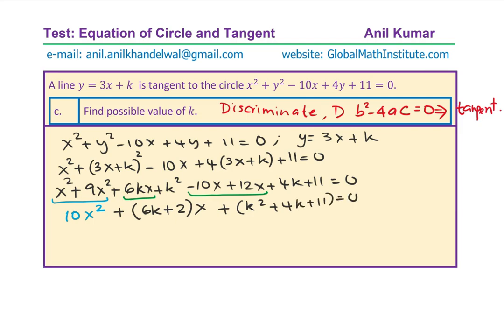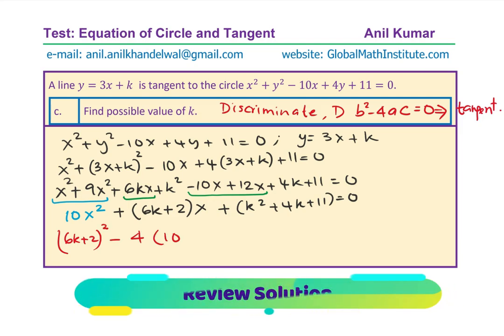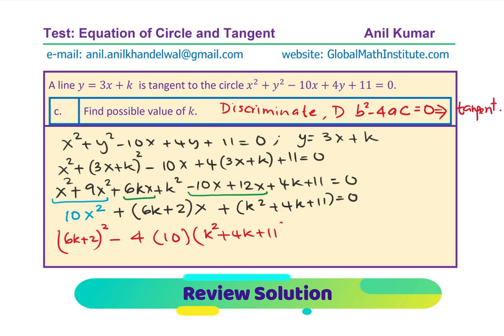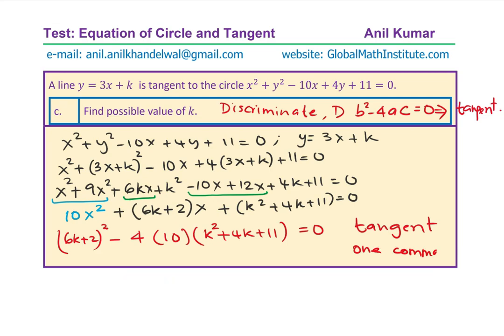This is the quadratic equation we have, and now b² − 4ac = 0 is what we need to apply for tangency. So b² is (6k + 2)², minus 4 times a (which is 10) times c (which is k² + 4k + 11), all equated to 0. Tangent means one common point — one real solution.